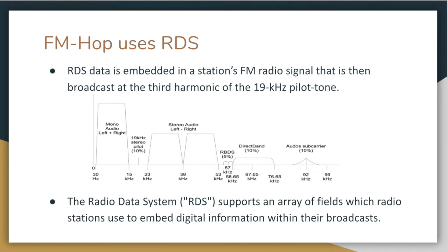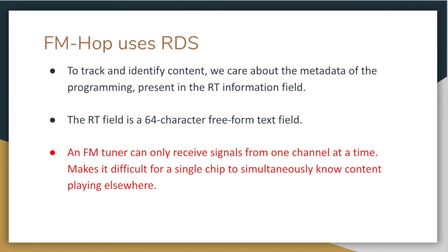FMHOP uses RDS. FM receivers are usually able to receive RDS signals. RDS is a protocol that allows broadcast FM radio to be accompanied by digital signals, and its purpose is to enhance FM radio functionality. In particular, we want to use the RT information field, which is a 64-character freeform text field that shows station-identifying information or text corresponding to the radio program being broadcast. While FM receivers receive RDS signals from channels they are tuned into, it makes it difficult for a single chip to simultaneously know content playing elsewhere, because an FM tuner can only receive signals from one channel at a time.